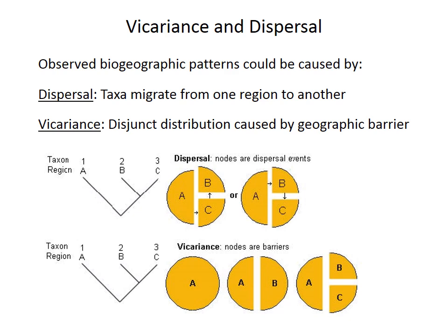In the lower example, species 1 originally lived over the entire circle, region A in the left-hand circle. But that large region was split into two by a barrier, and one of those subpopulations in the right-hand wedge evolved into species 2 in area B. Species 2 was later split into two smaller groups by another barrier, leading to the speciation of taxon 3 in region C. Notably, the cladogram and the final distribution are the same for both dispersal and vicariance.